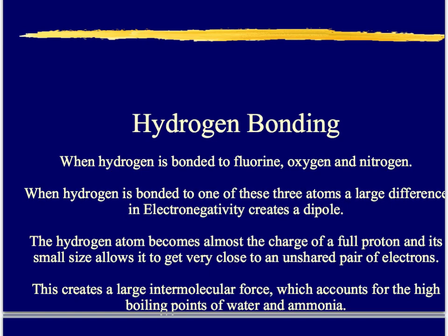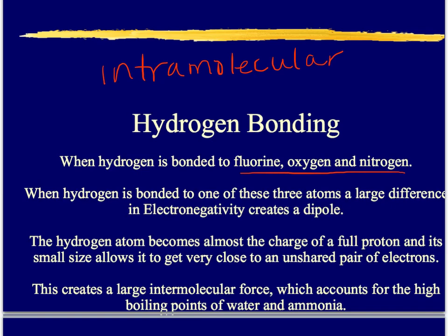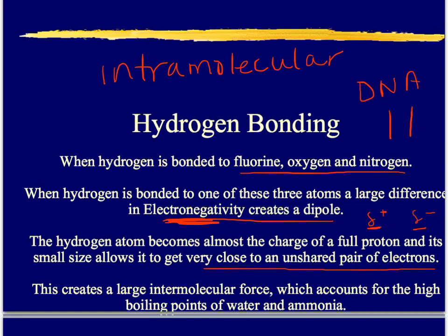The last thing to discuss is intermolecular forces — the forces between different molecules. Hydrogen bonding occurs when hydrogen is bonded to fluorine, oxygen, or nitrogen, which are highly electronegative atoms. When hydrogen is bonded to one of these atoms, there's a large electronegativity difference, creating a big dipole with a slight positive and slight negative. It's super strong because these are super electronegative atoms. The hydrogen atom becomes almost the charge of a full proton, and its small size allows it to get very close to an unshared pair of electrons. This creates a large intermolecular force, accounting for the high boiling points of water and ammonia, and was also important in DNA — holding those two strands together like rungs on a ladder.